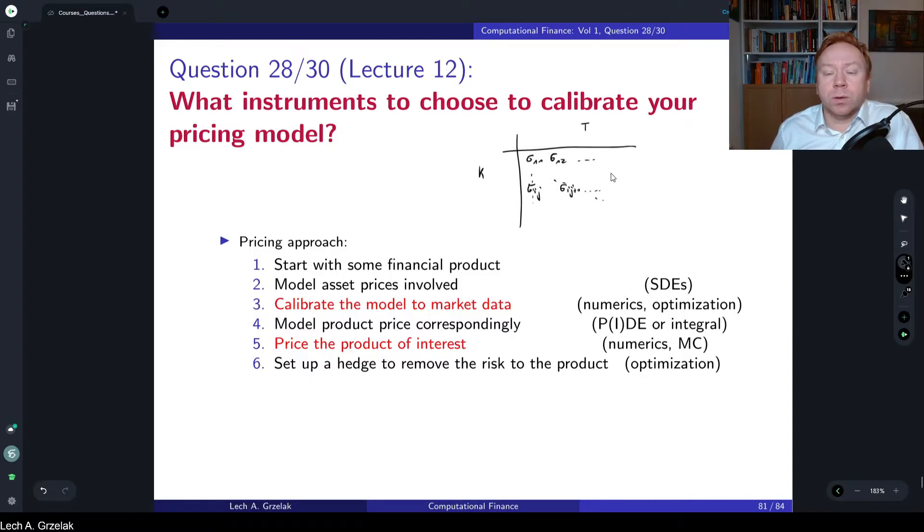If we price our exotic derivative, in this scenario we have a certain price for this set of market instruments. Now we would change slightly, so this means let's say plus epsilon. In finance we call it shock or a bump our market instrument, and then we would recalculate the price of our exotic derivative. So we would have an exotic derivative, let's call it price one, and then we have a price one and this would correspond to the new market data.